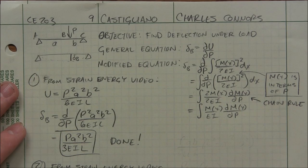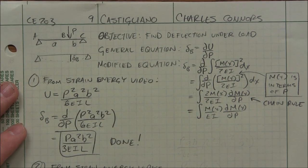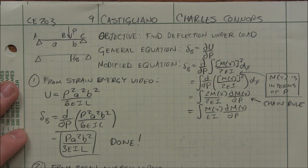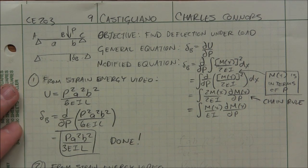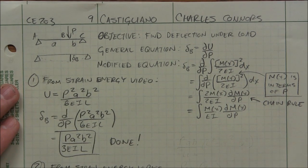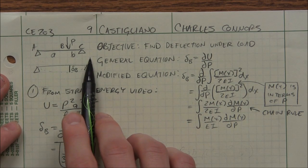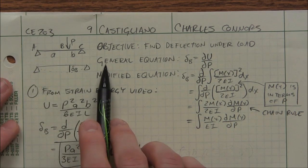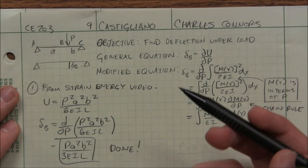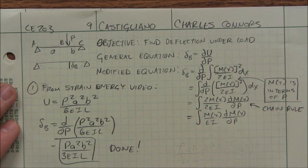So it's used to find deflections at certain points, specifically the point directly under a concentrated load. And we're going to have the same situation that we just did for strain energy so that we could take advantage of that fact and just focus on purely the method of Castigliano's theory.